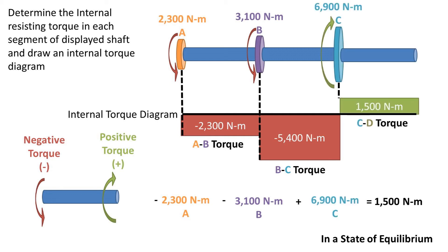Our next torque we hit is the positive 6900 newton meter torque at C. We can add this to the negative torque at A plus the negative torque at B to get the torque at CD, which is 1500 newton meters and is positive.